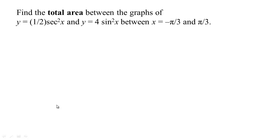This problem asks us to find the area between two trigonometric functions. When it says 'total area,' that's a key telling you that the curves might cross, but you don't want the area to cancel because the upper and lower curves have switched. Make sure you're always integrating the higher curve minus the lower curve so you get a positive answer for the area.